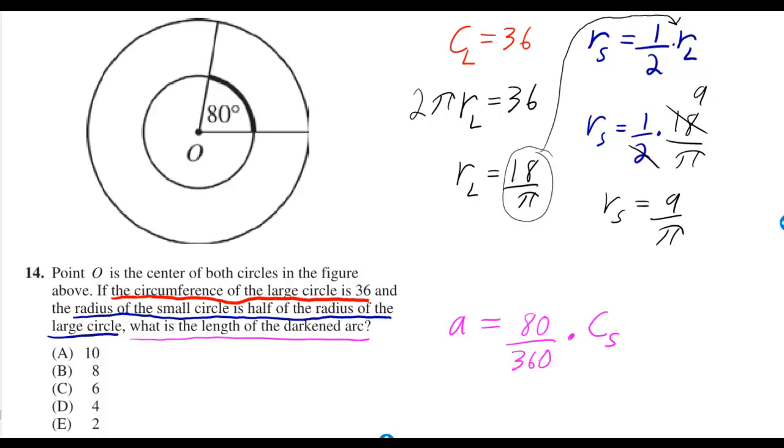If it was 90 degrees, then 90 out of 360 would just be a fourth, so it would be a fourth of the circumference of the small circle. But since it's 80, we have to put 80 over 360 times the circumference of the small circle.